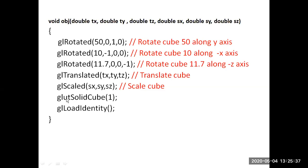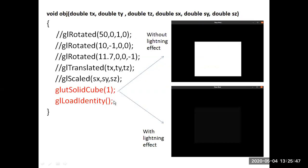glut_solid_cube is the function that draws a cube with size 1. If glut_solid_cube is called directly without any transformation, it will display a plain cube. Without any lighting effect enabled in the main function, it will just display a window with white color. When the lighting source is enabled in the main function, glut_solid_cube will display a shaded cube on the window — this is with the lighting effect.